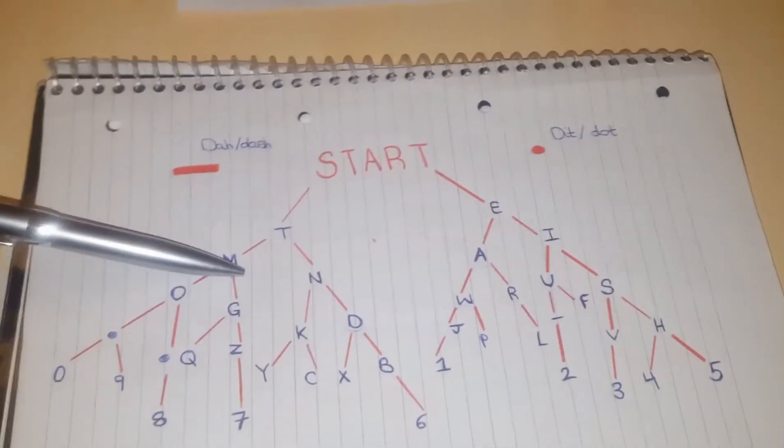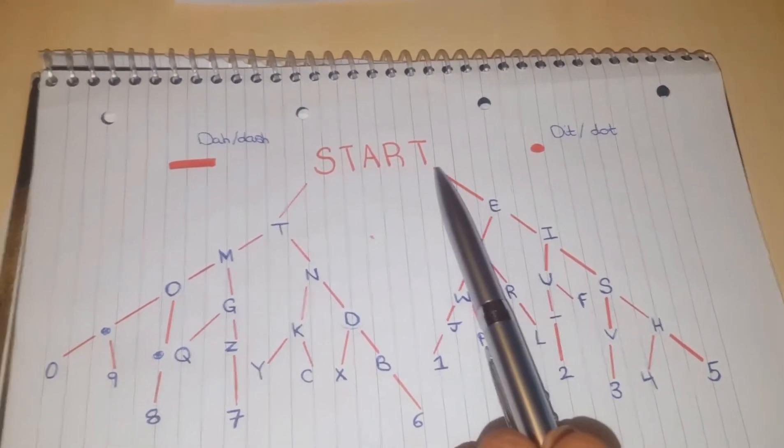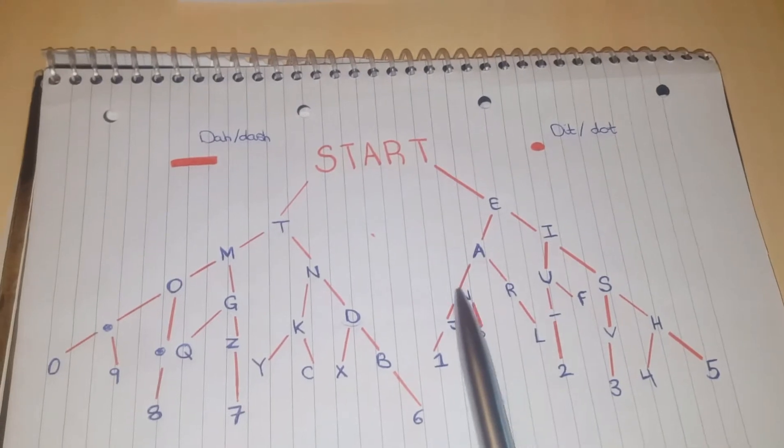So, for Q, you should be dash dash dot dash. For 1, which is here, you go dot dash dash dash dash.